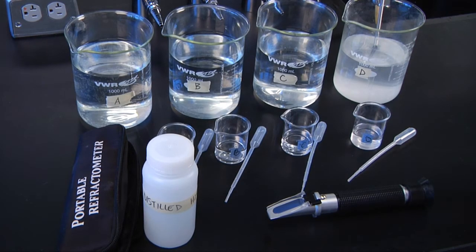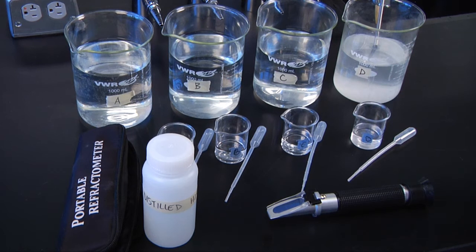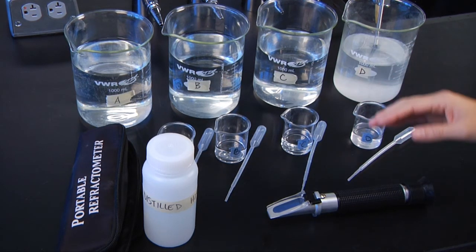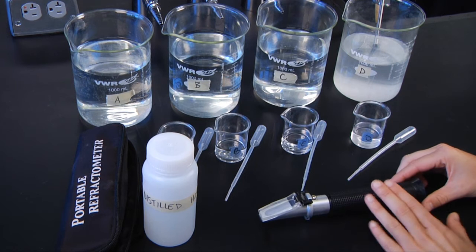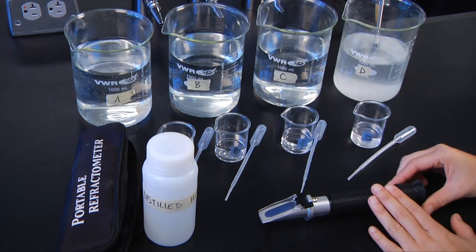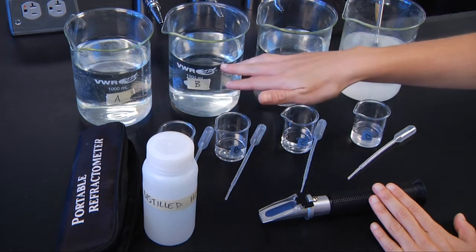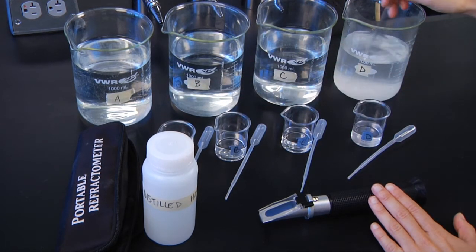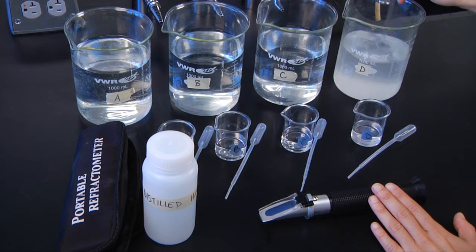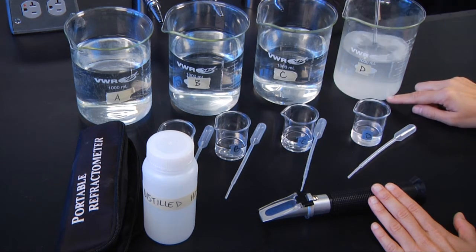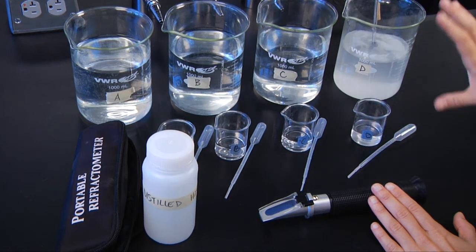So the second method that you're going to use to measure the salinity of these mystery samples is to use what's called a refractometer. So before we get into the details of using this instrument, make sure that when you're collecting each of these samples, that first you stir the sample to make sure that any salts that are on the bottom of the dish or at the bottom of the beaker are all mixed in.